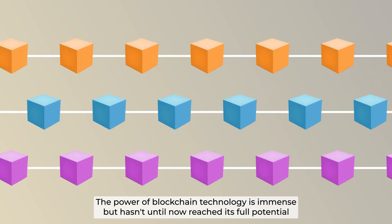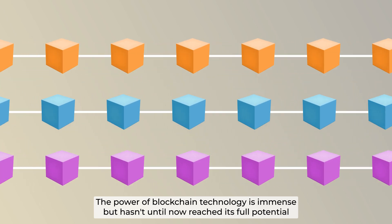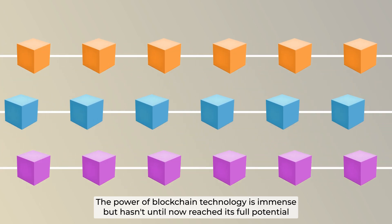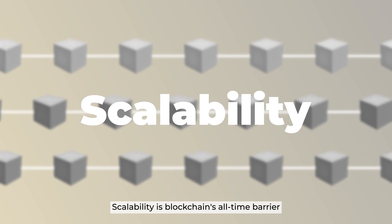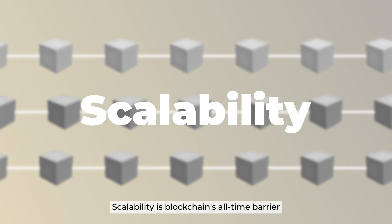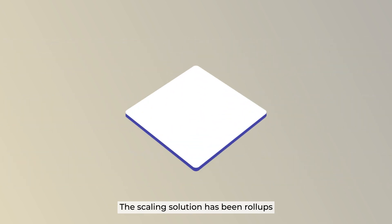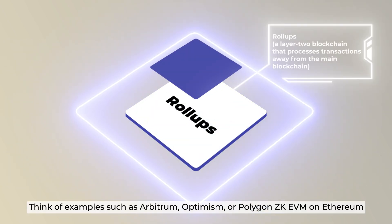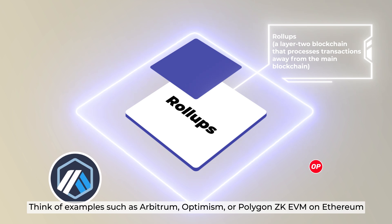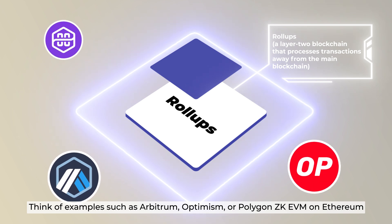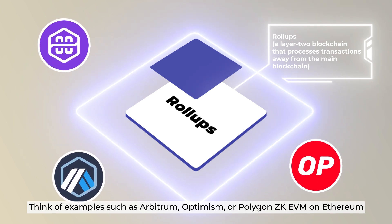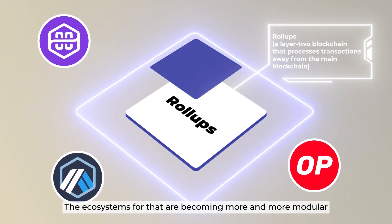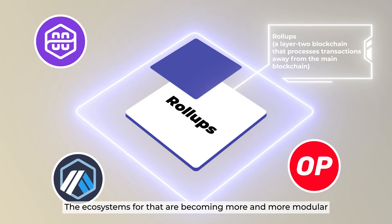The power of blockchain technology is immense but hasn't until now reached its full potential. Scalability is blockchain's all-time barrier. The scaling solution has been roll-ups — think of examples such as Arbitrum, Optimism, or Polygon ZKEVM on Ethereum. The ecosystem for that is becoming more and more modular.